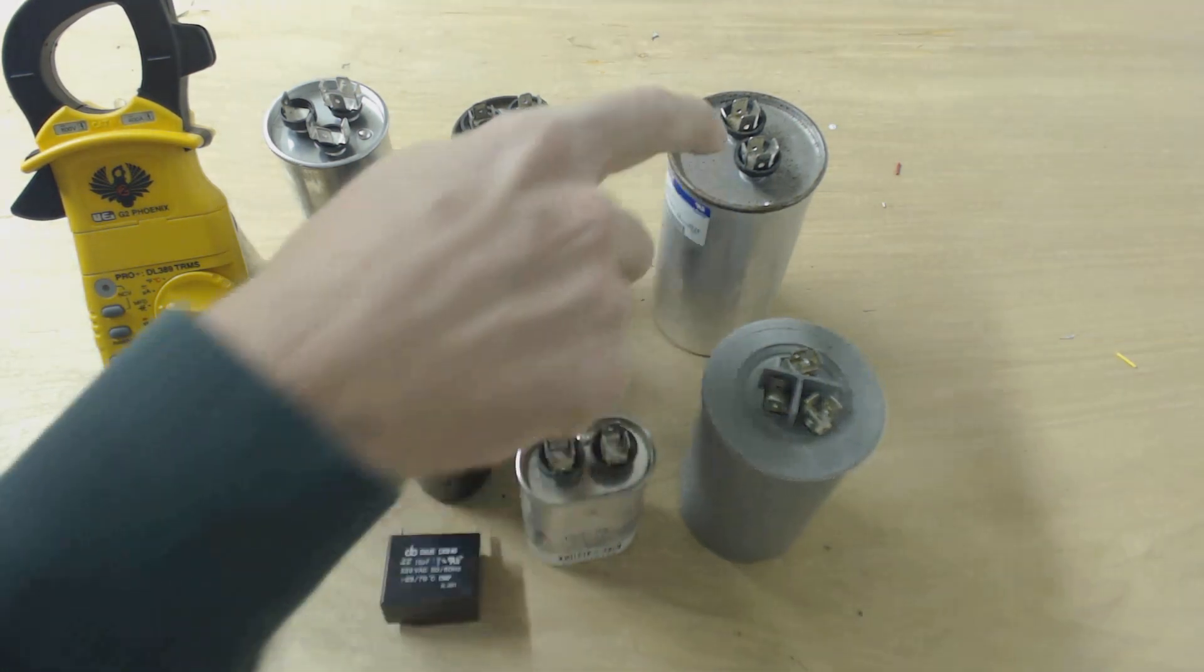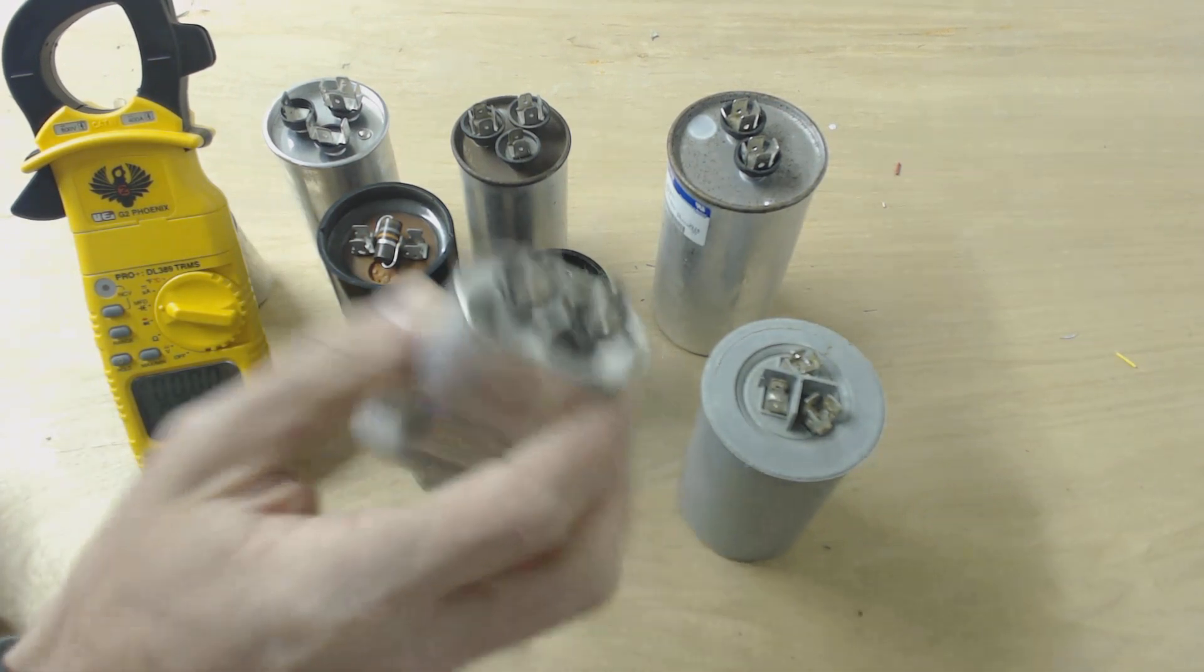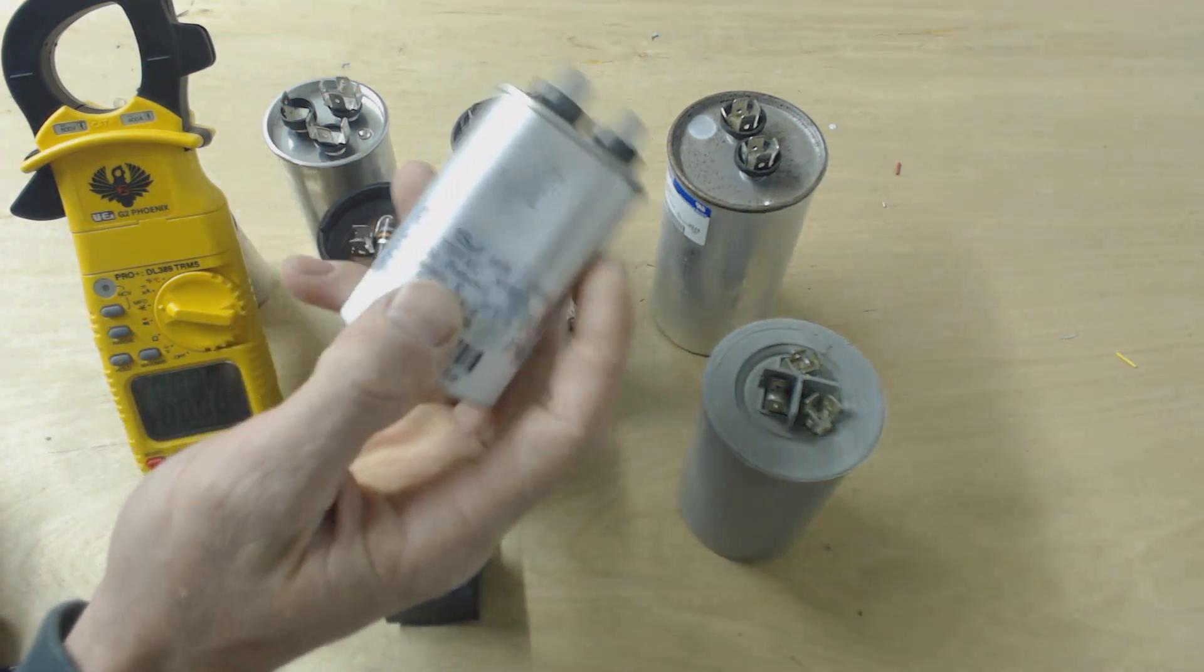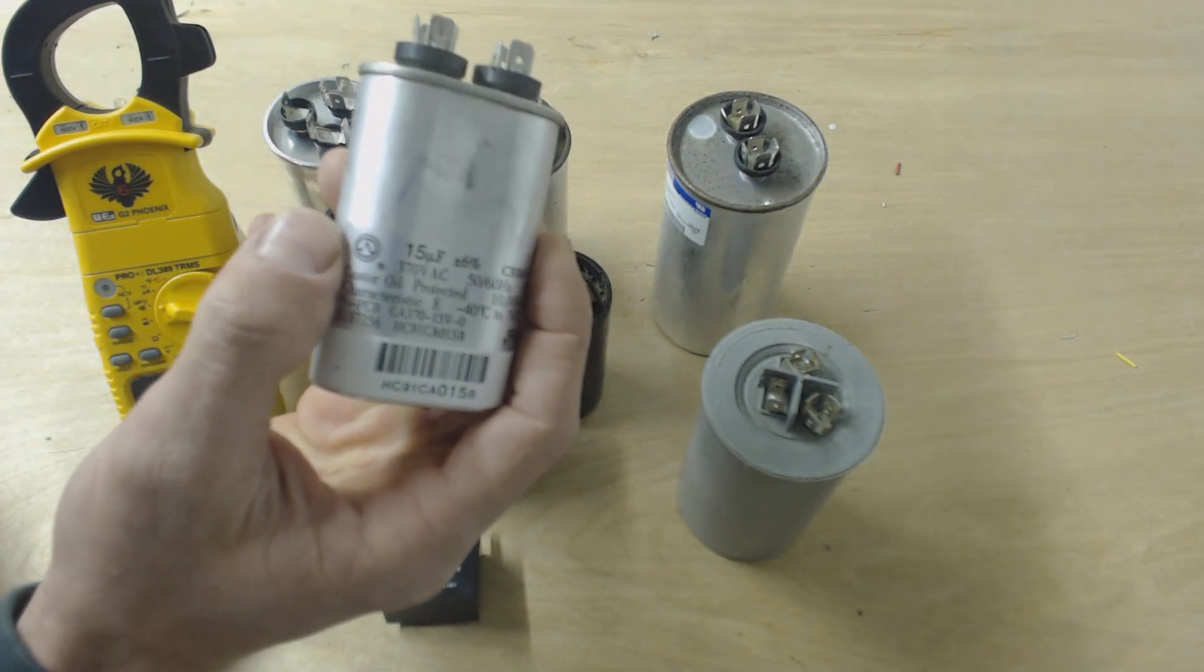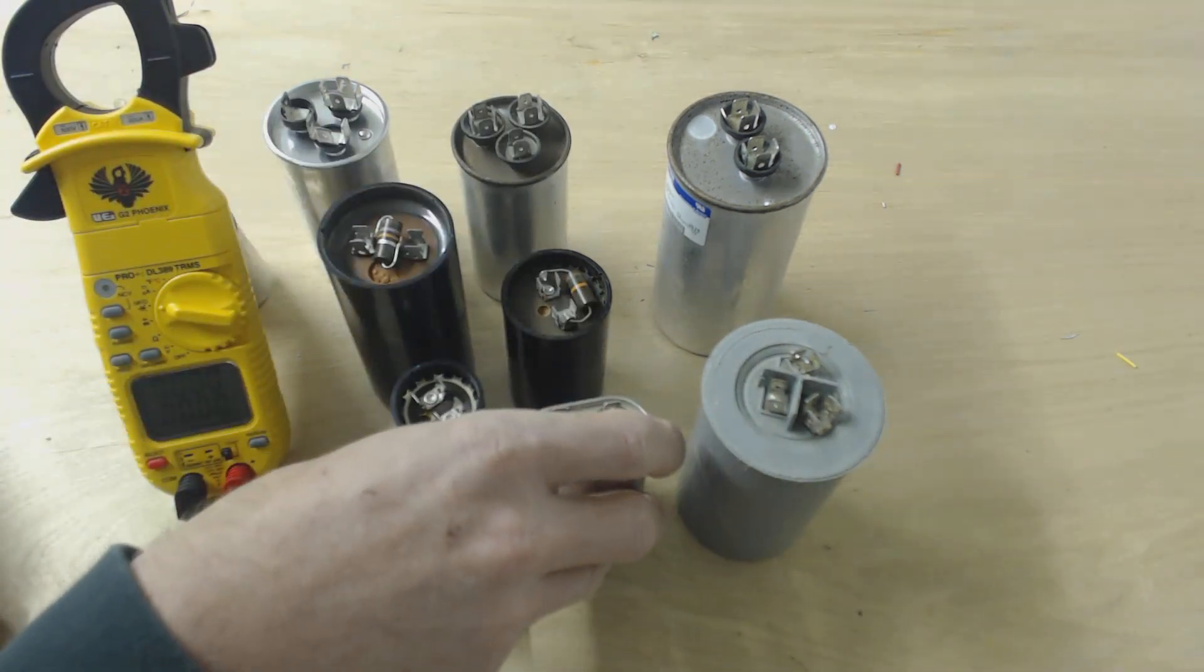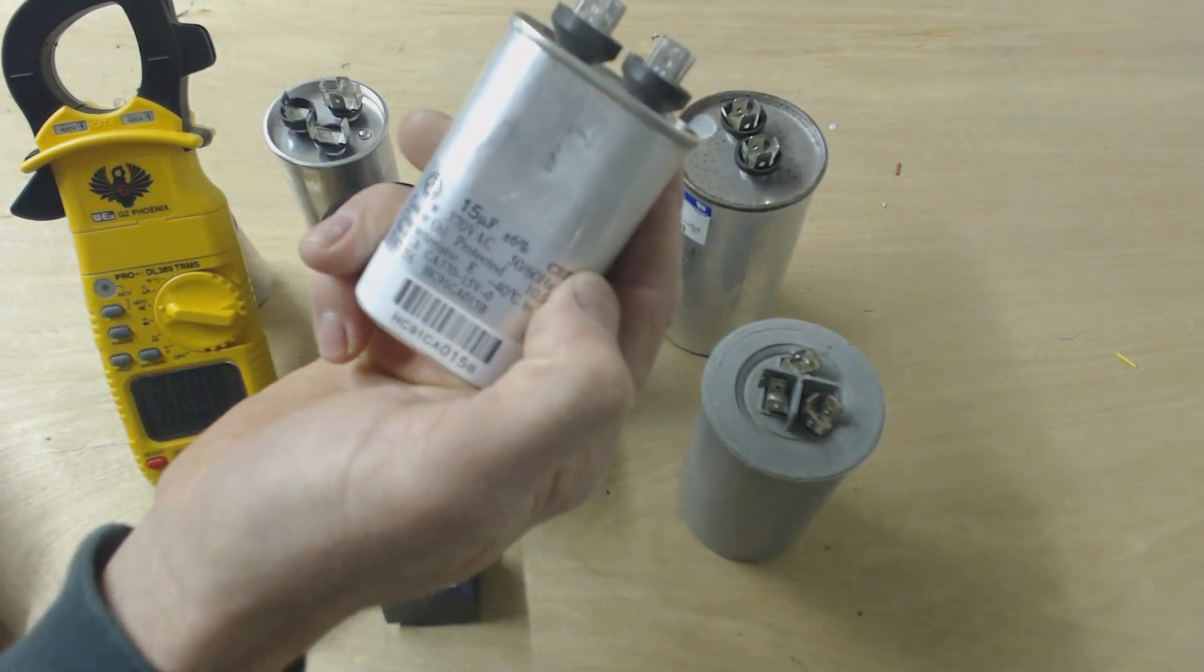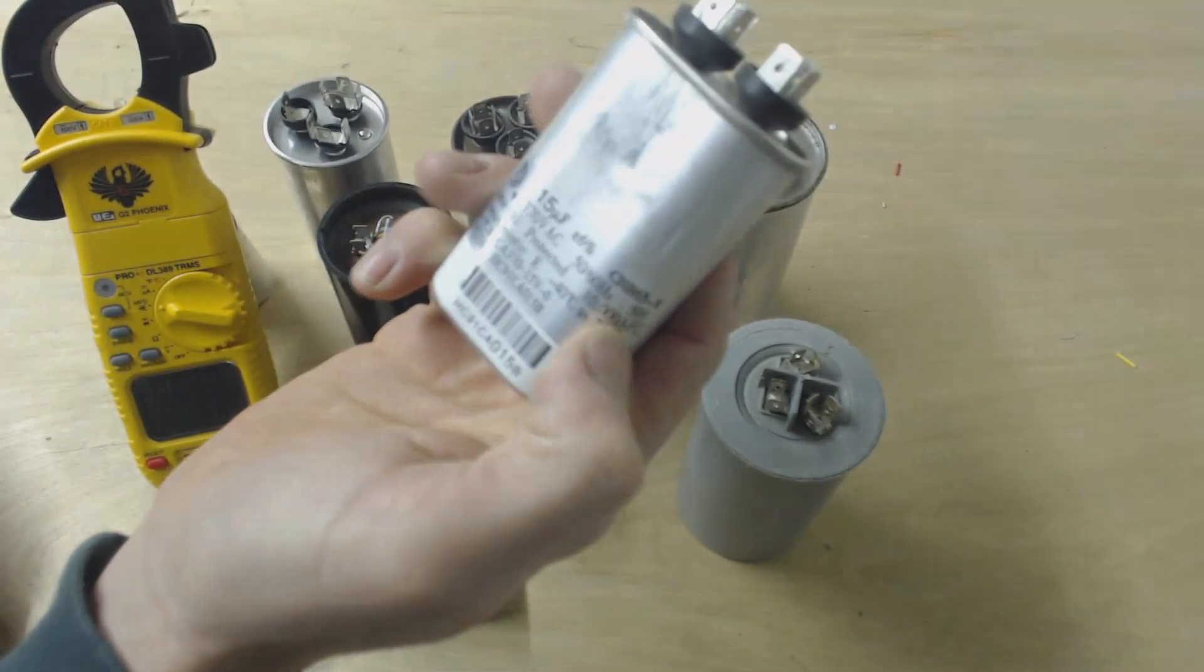These particular capacitors usually stay in line with the permanent split capacitor motor. They actually are needed for the motor to run. So you actually need this capacitor for the motor to start up, whether it's a compressor or a blower motor. You're going to need these to stay in line with the motor the whole time.